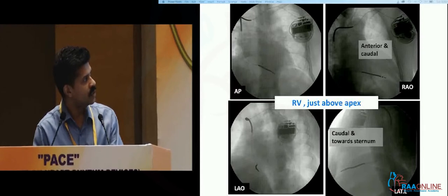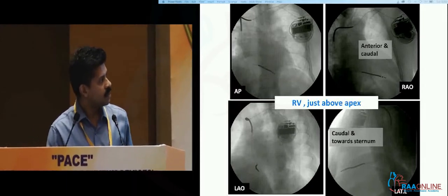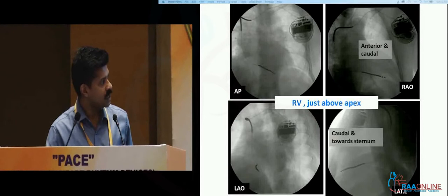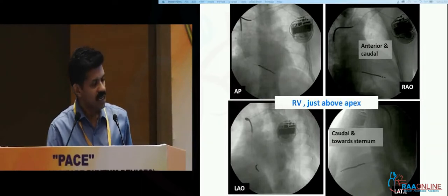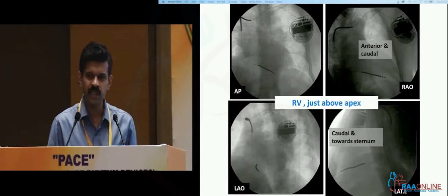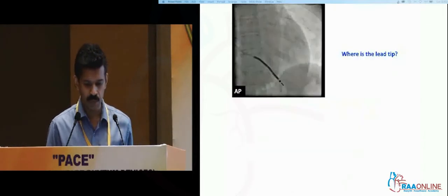Anterior, forward and caudal — and in the lateral view the apex is caudal, not really caudal and towards the sternum. So this lead is in the RV just above the apex, slightly near the anterior wall just above the apex.